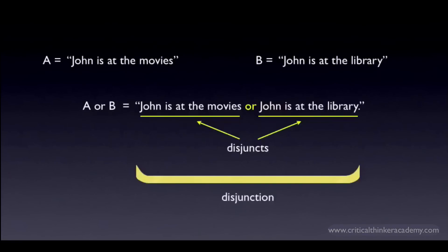You form a disjunction by saying that either one of a set of claims is true. In this case we've got two claims: John is at the movies and John is at the library. The disjunction asserts that one of these is true — John is either at the movies or he's at the library. The individual claims that make up a disjunction are called the disjuncts. So in this case, A and B are the disjuncts and the disjunction is the whole claim, A or B.